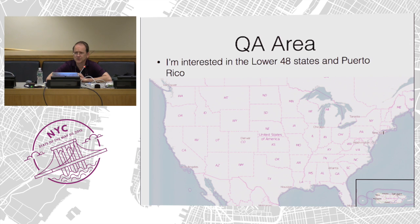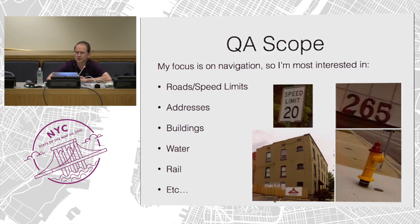For quality assurance, you need to pick an area. It's a big world. I picked the lower 48, which is still a big pick. Then you need a quality assurance scope. I come from a navigation background, so routing and navigation attributes such as streets, speed limits, addresses, buildings, water, rail, etc. I am a volunteer, so I can map whatever the heck I like.